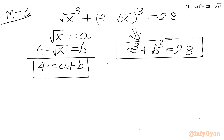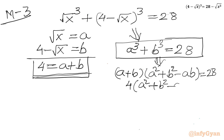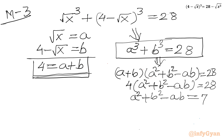So we have two equations: a + b = 4 and a³ + b³ = 28. I apply the a³ + b³ identity: (a + b)(a² + b² - ab) = 28. Substituting a + b = 4: 4(a² + b² - ab) = 28, so a² + b² - ab = 7.